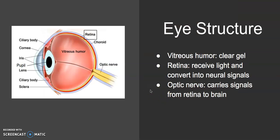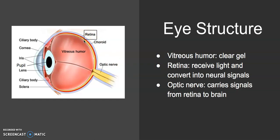We also have the vitreous humor, which is the clear gel in the middle of your eye — it's the majority of what makes up your eye. Your eye is not super solid; if you didn't have the vitreous humor it would just be full of air. The retina receives light signals and converts them into neural signals. And the optic nerve carries signals from the retina to the brain — it takes the information collected by the eye and tells our brain what's going on.